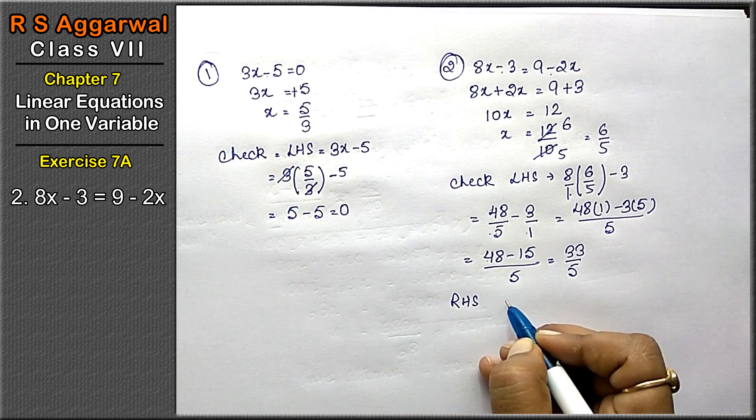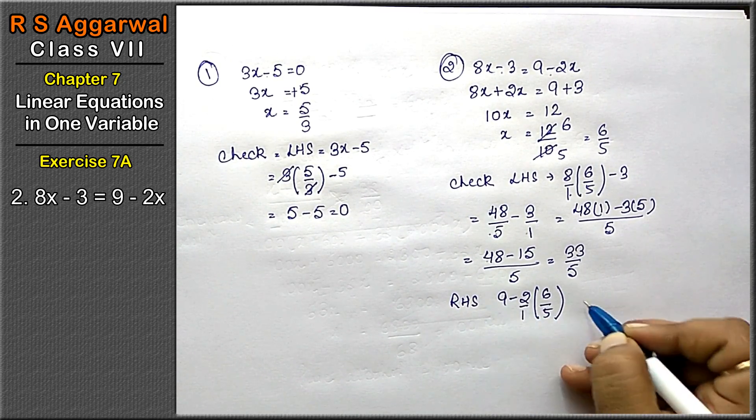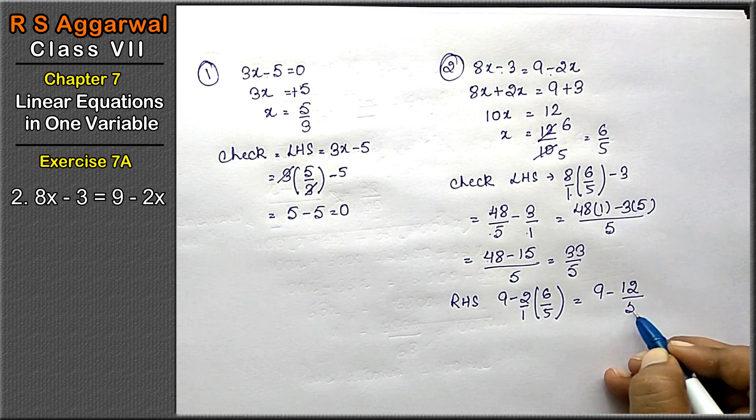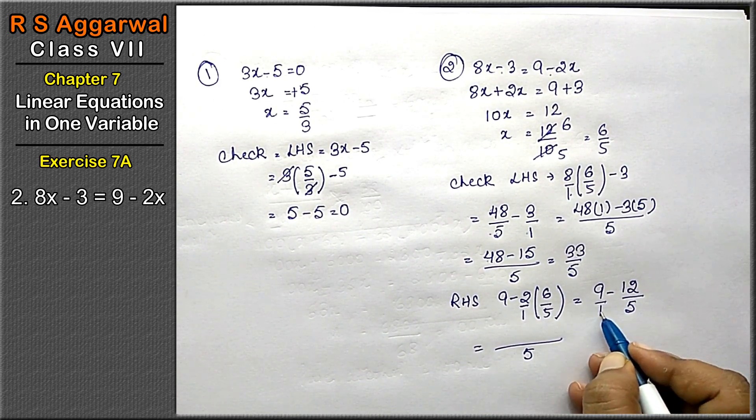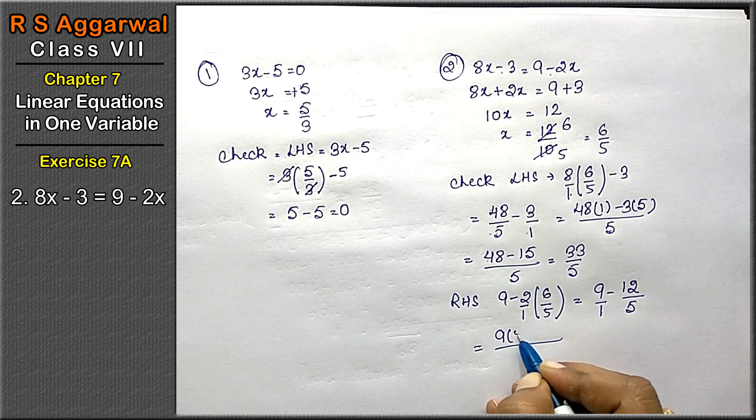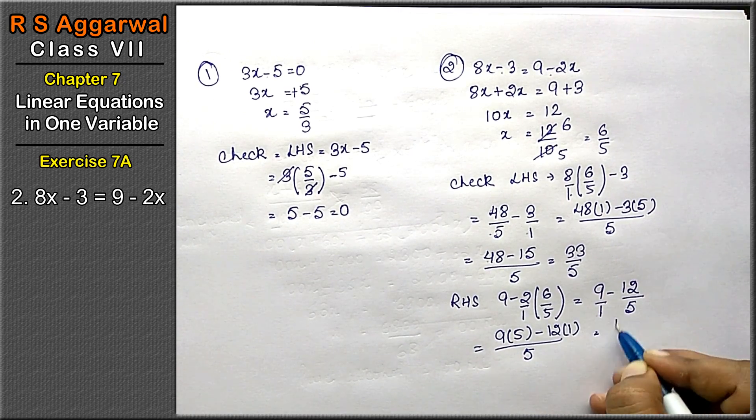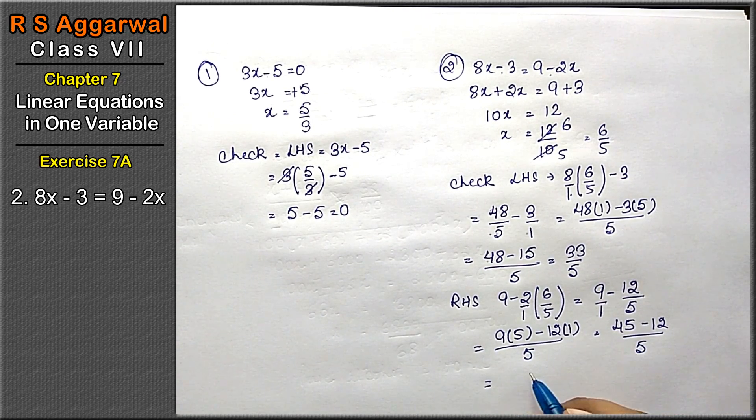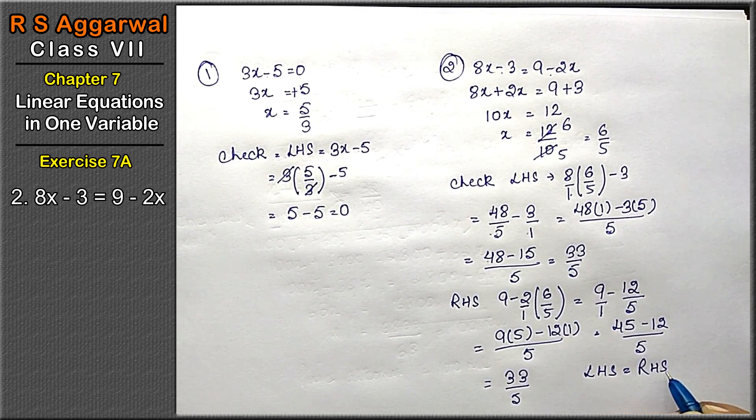Now we will see the right hand side. Right hand side is 9 minus 2x, x ki jaga 6 upon 5. 2 × 6 is 12 upon 5. Taking LCM as 5: 9 × 5 minus 12 equals 45 minus 12 upon 5, which is 33 upon 5. That means left hand side is equal to right hand side.